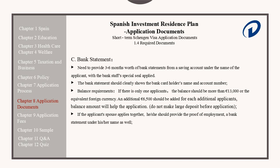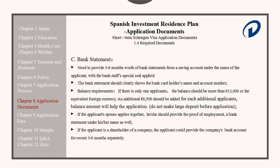If the applicant's spouse applies with them together, he or she should provide proof of employment and a bank statement under his or her name as well. If the applicant is a shareholder of a company, the applicant could provide the company's bank account for the recent three to six months separately.